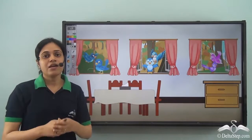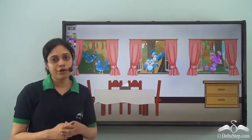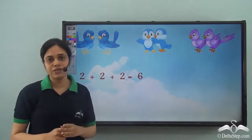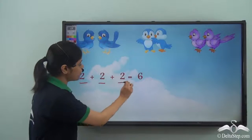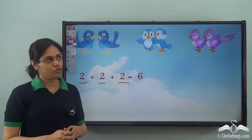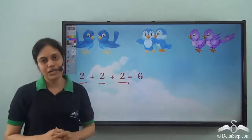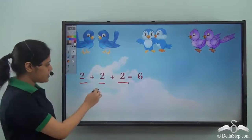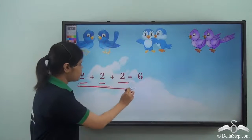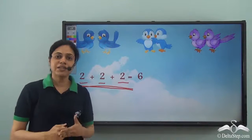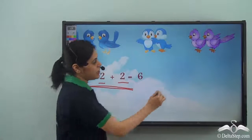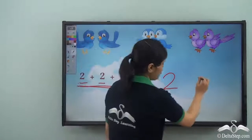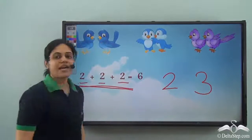Can you help Sara do this calculation in an easier manner? Is there an easier way to count these birds? There are two birds on each of the three windows, so two plus two plus two gives six. Now observe: two is added three times here. The same number, two, is added three times.